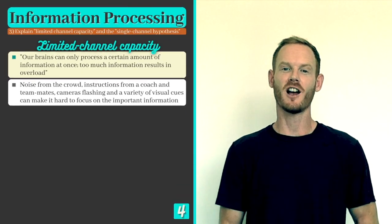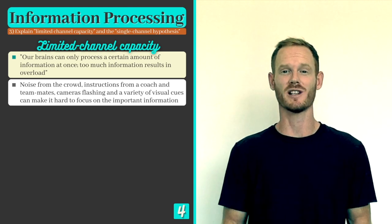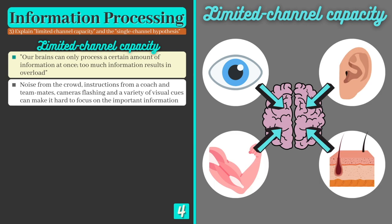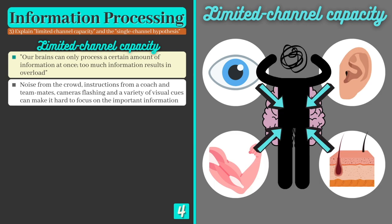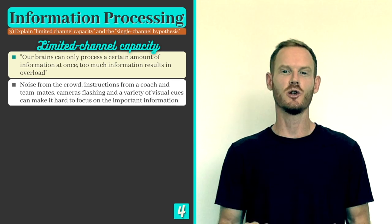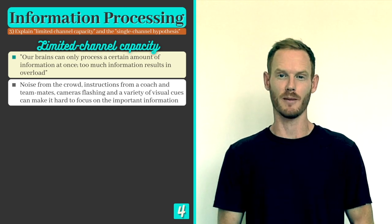Now we're on our final learning objective, which is to understand three terms that relate to our ability to process information in sport. Limited channel capacity is the idea that our brains can only process a certain amount of information at once, and that too much information can cause overload and confusion. For example, when a boxer steps into the ring, the camera flashes and crowd noise may distract them from their opponent and obscure their focus. There are two different takes on this limited channel idea: the single channel and multi-channel hypotheses.